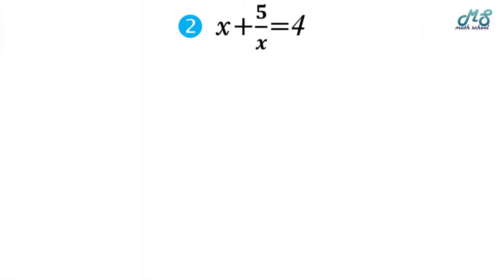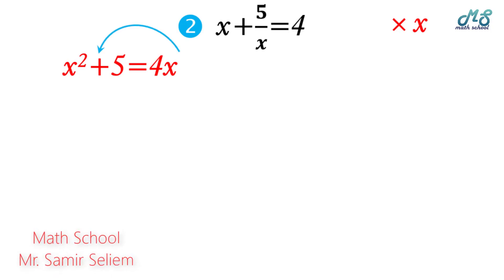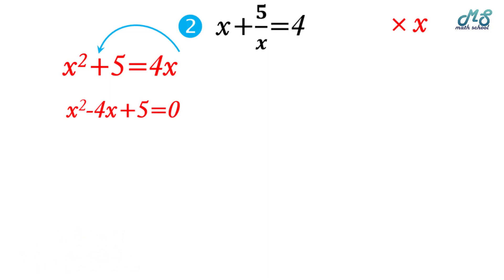Number two: x plus 5 over x equals 4. First, write the equation in standard form. Multiply through by x to get x squared plus 5 equals 4x. Move 4x to the other side and reorder to get x squared minus 4x plus 5 equals zero.